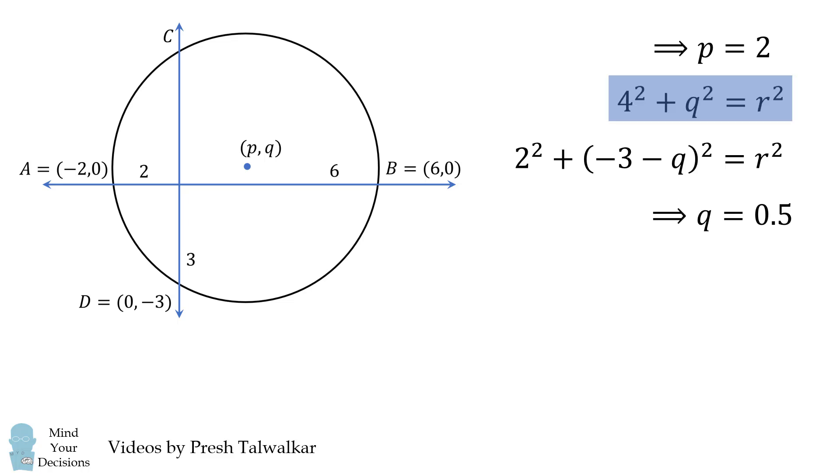We can then substitute that into our first equation and we'll get 4 squared plus 0.5 squared is equal to r squared. We can then solve that r is equal to the square root of 65 all over 2, which is approximately 4.031.